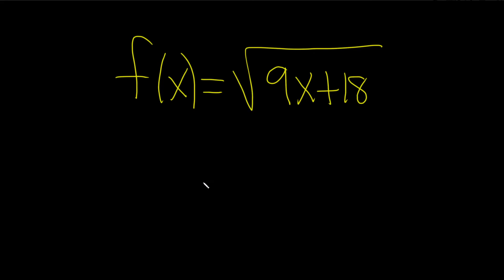We're being asked to find the domain of this function. This is a square root function because whenever there's no number here, there's really an invisible 2. This is called the index, and if the index is even and you're looking for the domain, all you have to do is take this piece here and set it greater than or equal to 0.